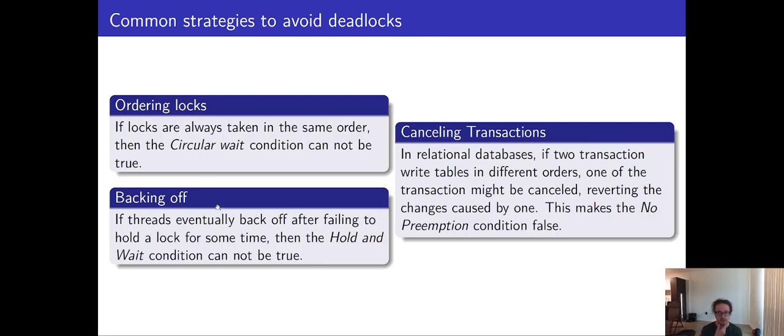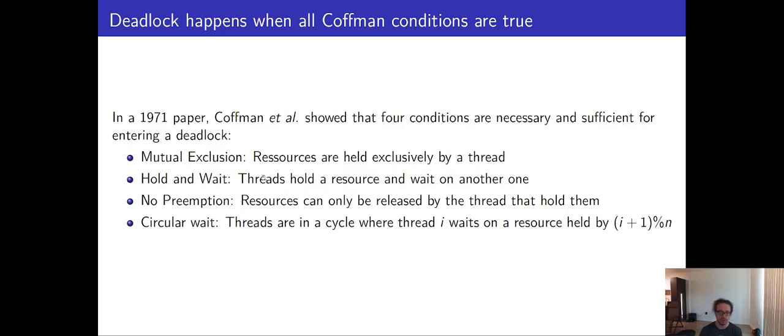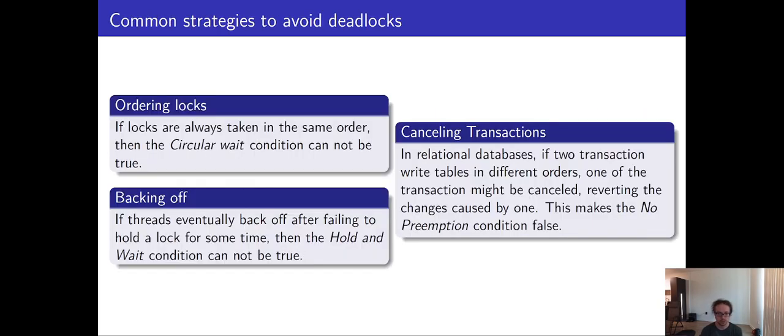These are the three strategies. Of course, there are other strategies that we can use. The key goal of each of these strategies is just to invalidate one of the conditions. If we can invalidate one of the four conditions, then we have no deadlock. And so this is a really crucial concept to designing more complex parallel programs.